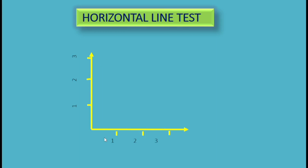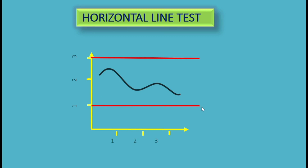The second case: consider a coordinate axis with x-axis and y-axis and a curve representing a function. We apply a horizontal line to the curve — the horizontal line does not meet the curve. We apply another horizontal line — again, it does not meet the curve.